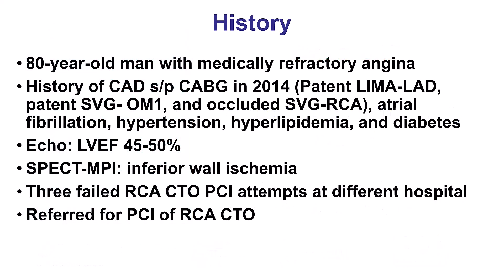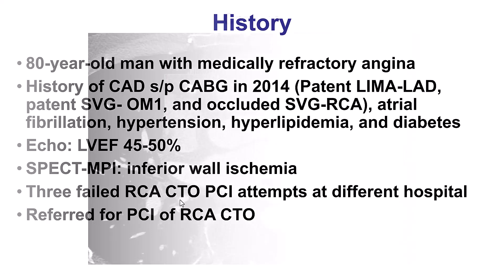The patient was an elderly gentleman with significant angina, had previous bypass with occluded vein graft to the right coronary artery, nearly normal ejection fraction, inferior ischemia, and a right coronary artery CTO that had been attempted three times in the past without success.